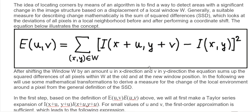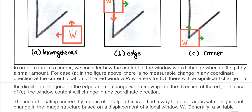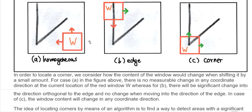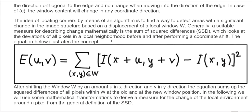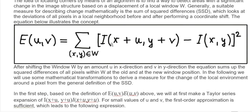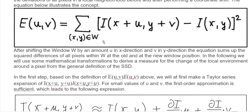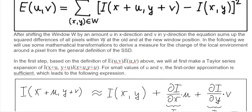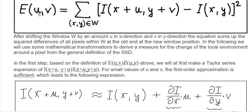The SSD equation shows how the pixel values change after we move the window in the X or Y direction. After shifting window W by a small amount in X or Y direction, the equation sums the squared differences of all pixels within W at the old and new window positions. We base this on the definition of E — the amount of movement in X and Y direction.